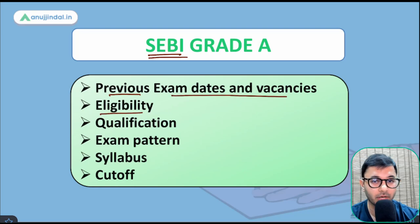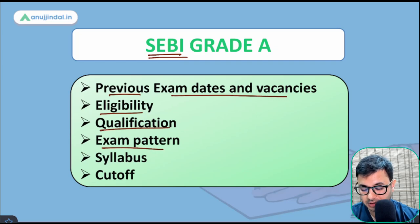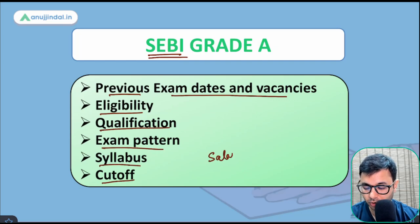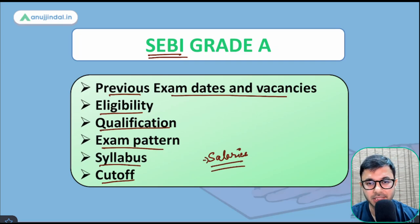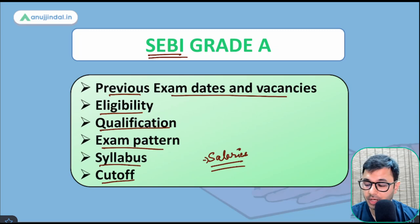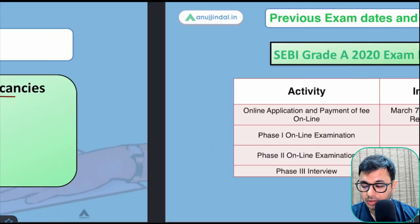There are a lot of students who are declared ineligible at the end because when they start preparing they don't look at the requirements, and then they realize they are ineligible. So it's better always to make a very rational and informed choice before making such a big commitment for an examination like this. We'll be discussing previous exam dates, vacancies, eligibility, exam pattern, syllabus, cutoff, and salaries including perks.